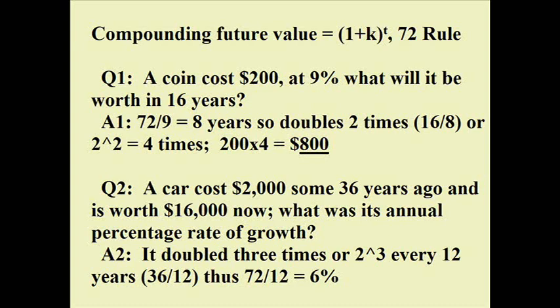Here's an example: a coin costs $200 and at 9% what will it be worth in 16 years? Nine percent times how many years equals 72 — divide by 9 and we get 8 years to double. It doubles twice in 16 years, that's 2 to the second power, so it's 4 times $200 which equals $800.